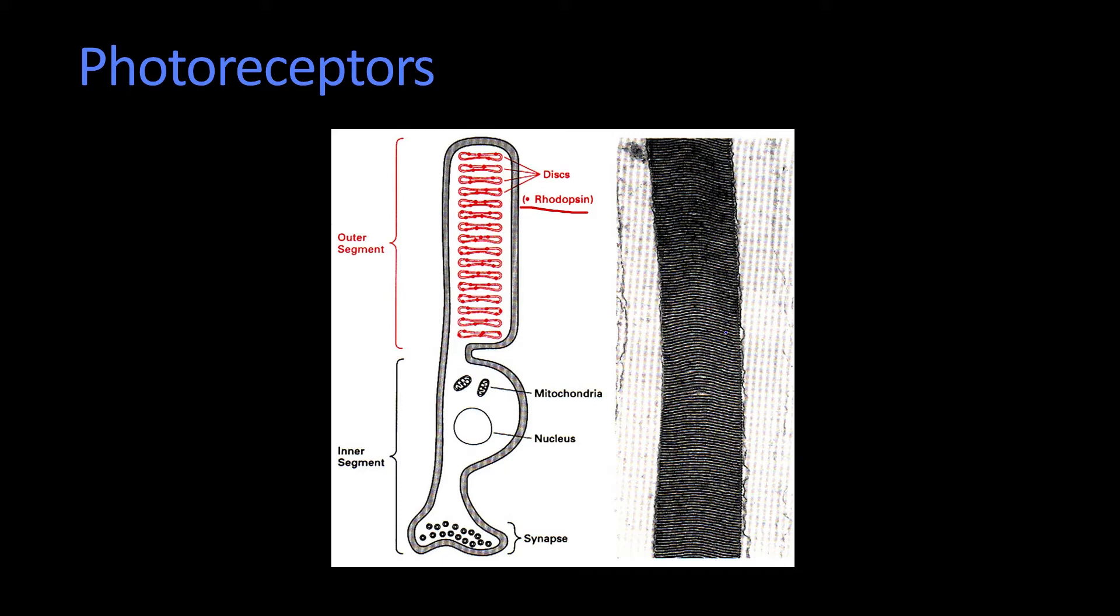All right? And here, this is an electron micrograph of what it actually looks like. And this outer segment is made up of these plates, the rhodopsin plates. And what happens is that the rhodopsin is a chemical that when it gets hit by photons, it splits into two chemicals. I don't remember both their names.